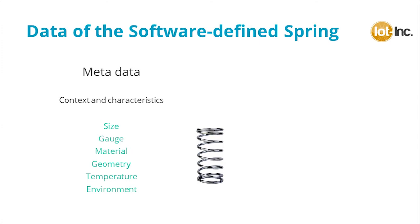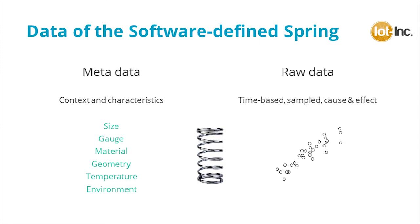Metadata is one of two types of data captured by the digital twin. Raw point data is the second form — collected by sensors, time-based, and representing cause and effect. In this simple example, force and extension data is collected by sensors to better understand how the spring actually works within its environment.